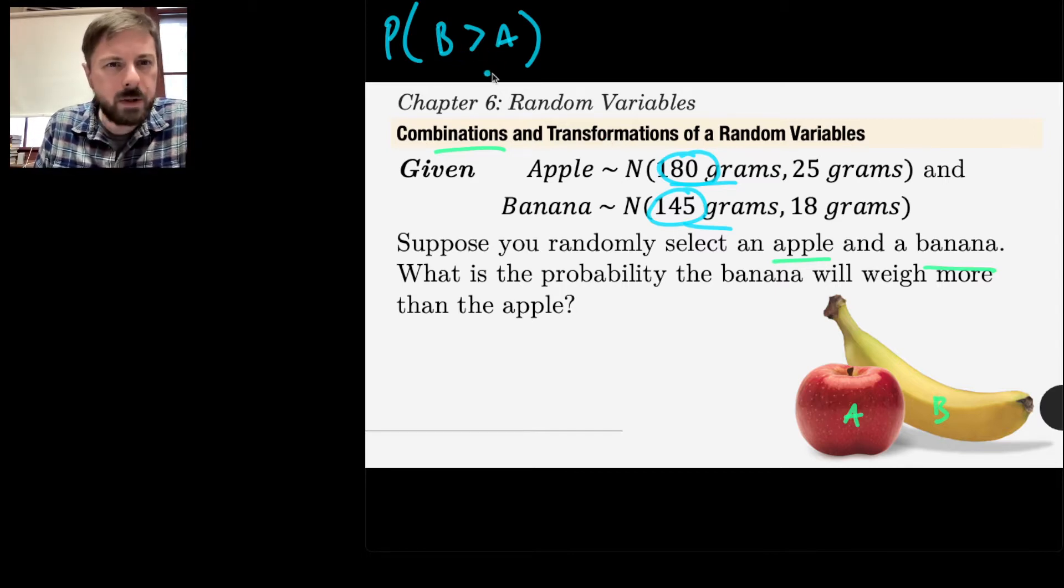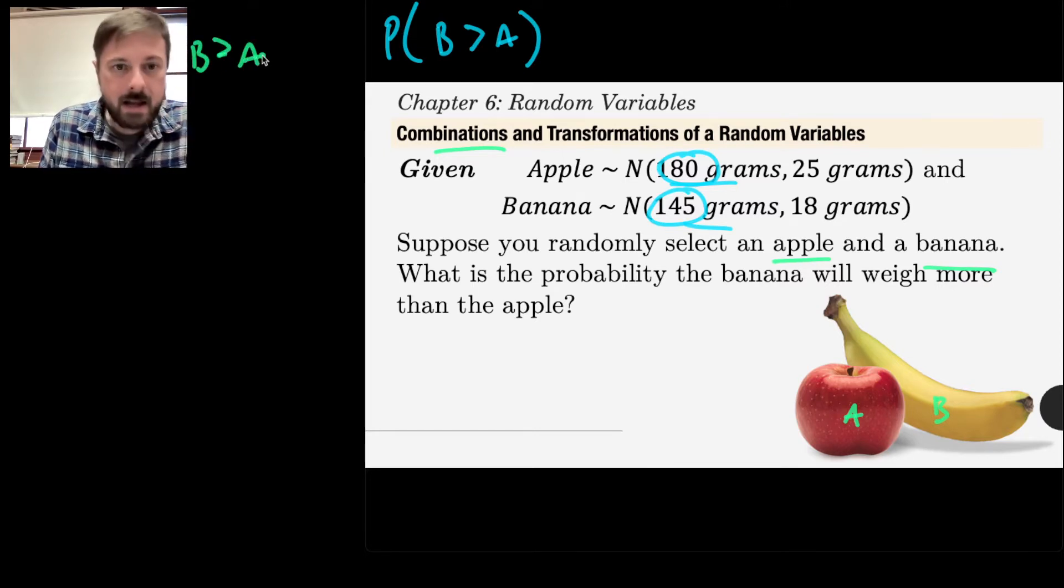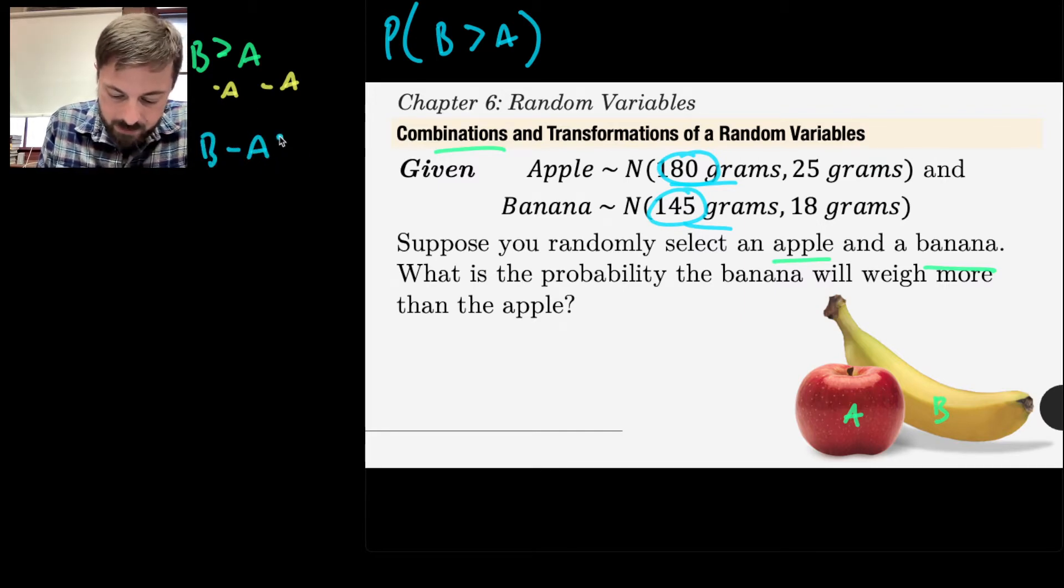Right now, just having an inequality between two variables is strange. That's not something we know how to deal with. However, I could manipulate this. For instance, think about algebra one. If I wrote B is greater than A, couldn't I subtract A from both sides? Then I could rewrite this as B minus A is greater than the number zero.